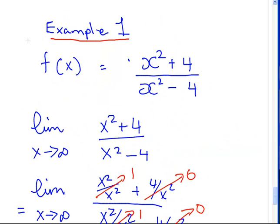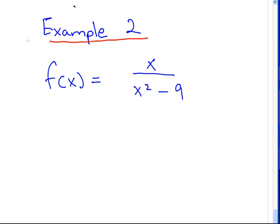Okay, so, let's go back here now. Second example, x over x squared minus 9. Let's get the horizontal asymptotes of that. Limit as x goes to infinity of x over x squared minus 9.